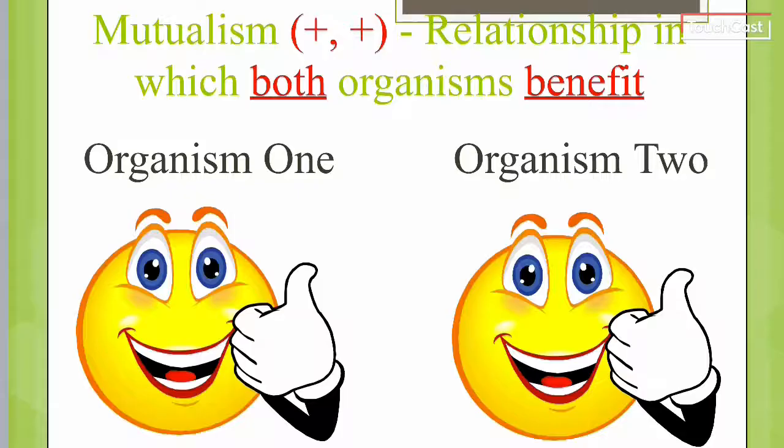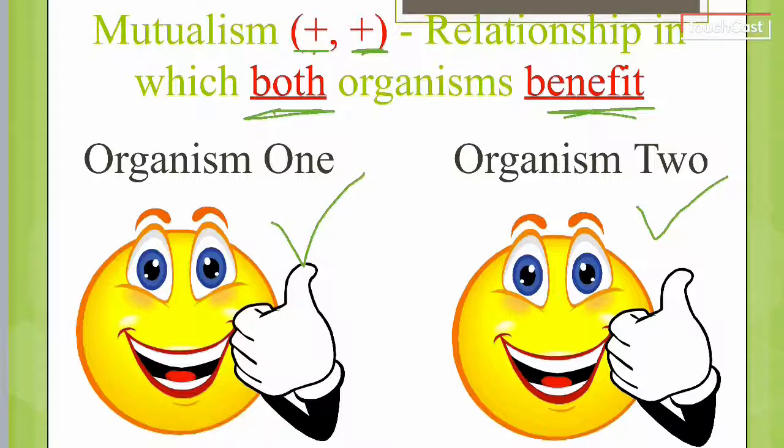Mutualism is the first relationship. On the front cover you have the word mutualism, then a parentheses — fill that in with positive and positive. A mutualistic relationship is a relationship in which both organisms benefit. Organism one is happy and organism two is also happy, so it's a positive for both organisms involved.